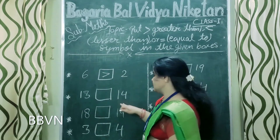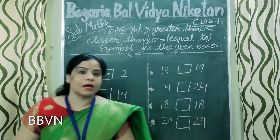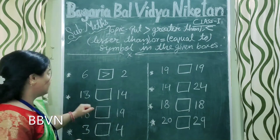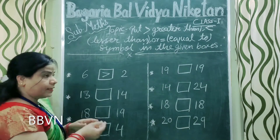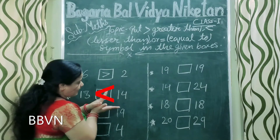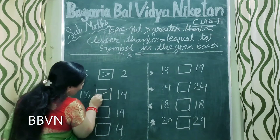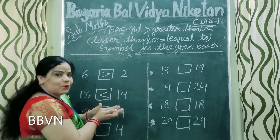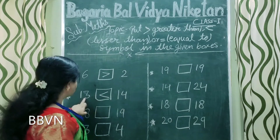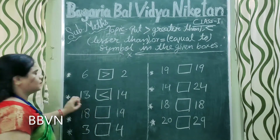Here are 13 and here are 14. Aap bataayi, kaunsa alligator kaunsa number khaa lega? Kaunsa number bada hai? 14, or here are 13. To alligator ka face ab kis taraf open hone waala hai? 14 ki taraf — ab uske face ko open kar do. So this is the greater, and this is smaller, means lesser than.